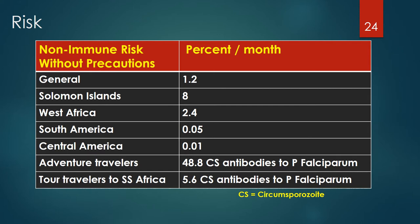For non-immune individuals not taking precautions in malarial areas, the general risk of being infected is approximately 1.2% per month. For non-immune individuals like many long-term missionaries or other long-term international workers living in malaria risk areas and not taking precautions, the infection rate may be as high as 57% over 4 years. There is significant variation in risk based on location. The greatest risk is found in some Pacific Islands — for example, the Solomon Islands has approximately 8% per month. West Africa has 2.4% per month. Latin America has a much lower risk, ranging from 0.1% to 0.5% per month.